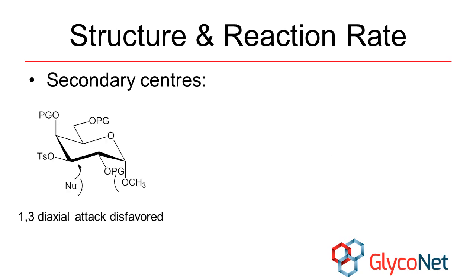Other factors come into play at the secondary positions. Axial substituents are displaced more readily than equatorial substituents, but 1,3-diaxial attack is disfavored due to steric and dipole repulsion.